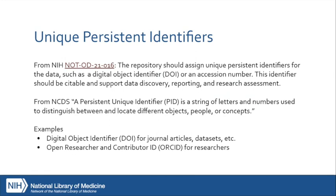Sharing data through a repository can be one of the biggest benefits to researchers, because most repositories will assign a unique persistent identifier or PID to a dataset that they ingest or accept. This makes the data not only findable but trackable, shareable, and citable. Most of us are familiar with digital object identifiers, DOIs, and open researcher and contributor IDs, or ORCIDs, which are specifically for people — researchers, librarians, and others — and can be linked to journal articles and other publications including datasets.